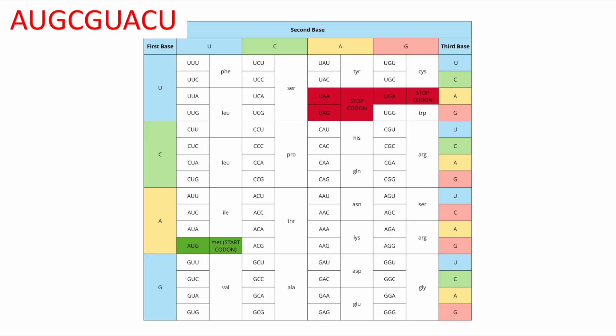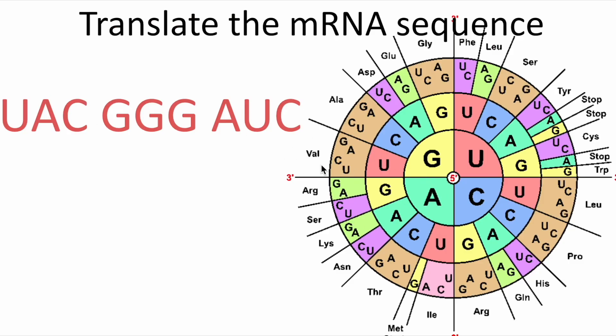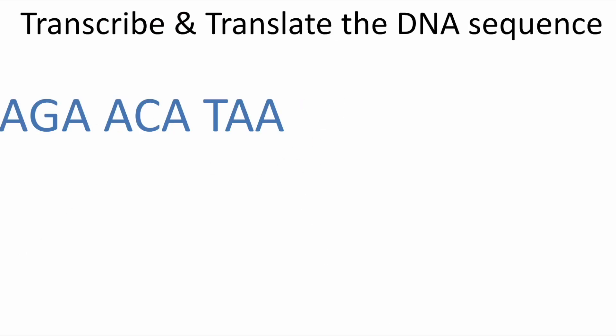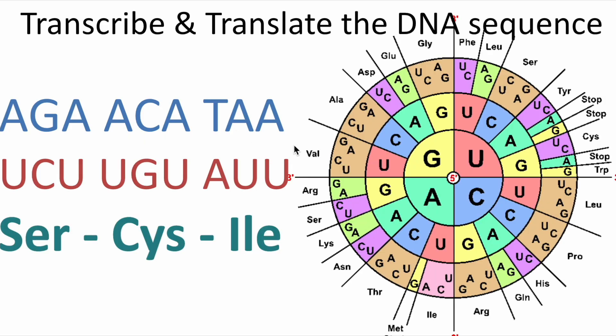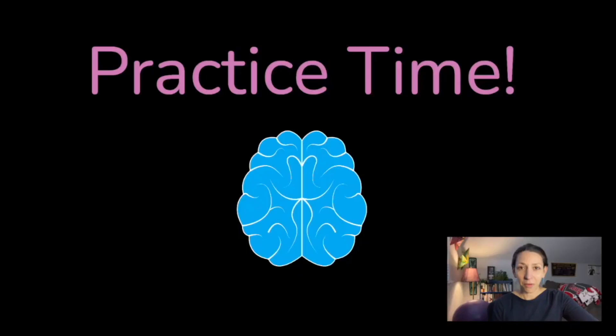Now remember, if you're asked to translate a sequence, you're going to use a codon chart. If you're asked to transcribe a DNA sequence, remember to turn it into RNA first. Another hint that you're working with DNA is that T's will be in the sequence. If you're working with RNA, there should be no T's because remember in place of T's, there are U's.